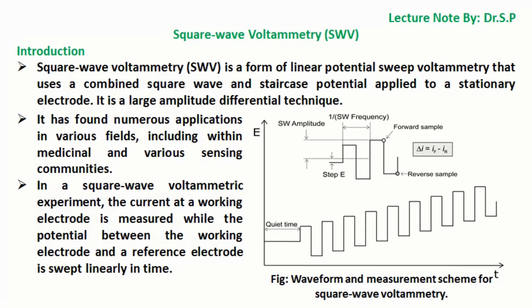In this tutorial we will discuss square wave voltammetry, SWV. Square wave voltammetry is a form of linear potential sweep voltammetry that uses a combined square wave and staircase potential applied to a stationary electrode. It is a large amplitude differential technique.